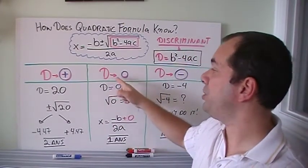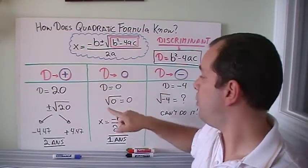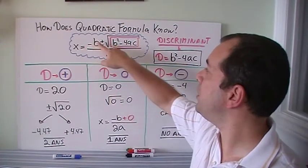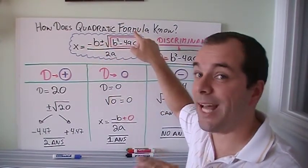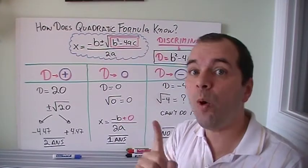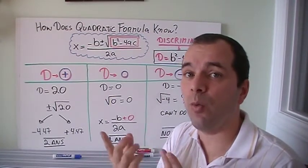When the discriminant happens to be zero, in other words if I'm gonna do the square root of nothing, well the square root of nothing is still nothing. Therefore I'm gonna do minus b plus or minus nada, plus or minus nothing. So it's minus b divided by 2a, and I only have one possible answer, and that's when we're gonna have only one zero or one real root.